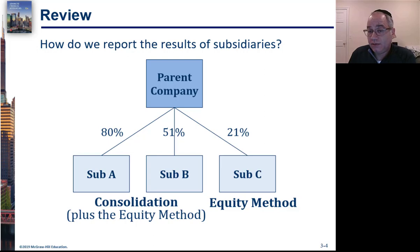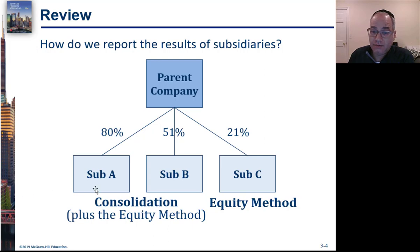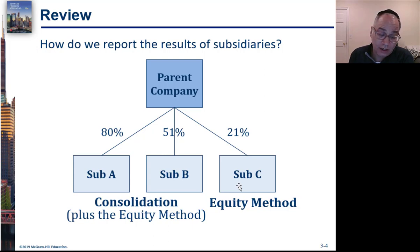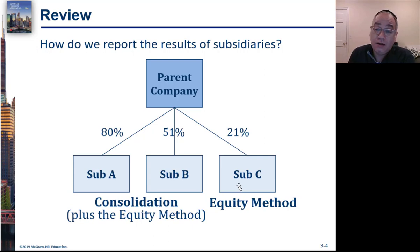Basically, you're going to consolidate when the parent controls more than 50% of the investee. So if Subsidiary A is 80% owned and Subsidiary B is 51% owned, then these entities would be consolidated. Subsidiary C is only 21% owned — assuming you have substantial influence, you're going to need to use the equity method, but that doesn't mean you should consolidate.